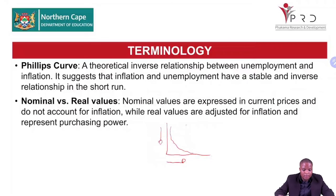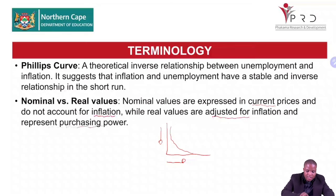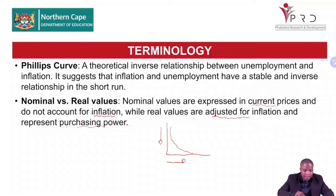Nominal values are expressed in current prices and do not account for increases in prices — they do not account for inflation. Real values are adjusted for inflation and represent purchasing power. They use constant prices — they remove the effect of inflation and represent purchasing power.